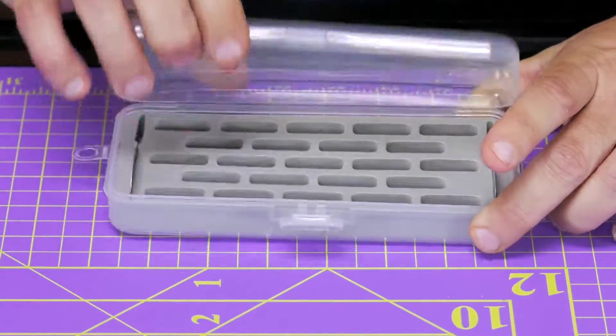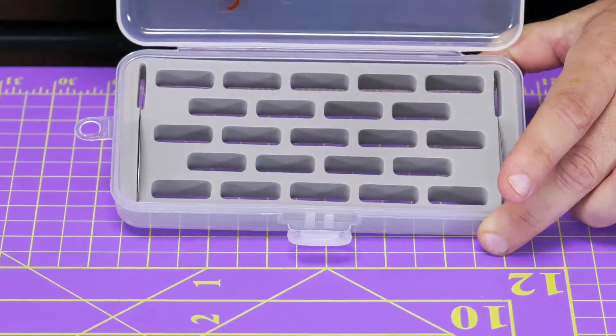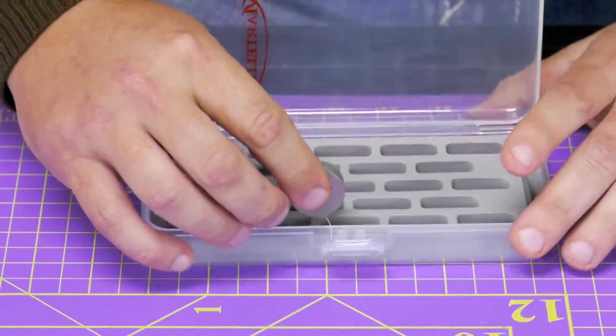Notice the see-through case. When I open it up, look at the multiple slots. It fits the M bobbin in there very easily with plenty of room.